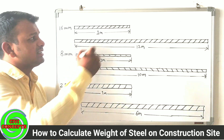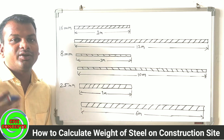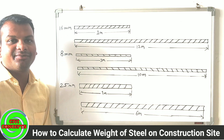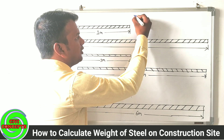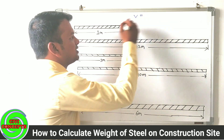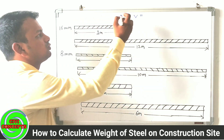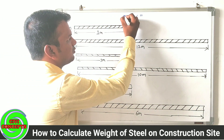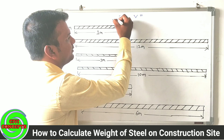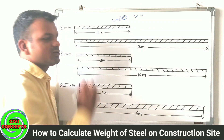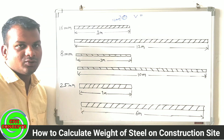First, I will explain that to find the weight of any bar, we need to find the volume. To find the volume, we use the cross-section. So this bar has a diameter of 16mm.